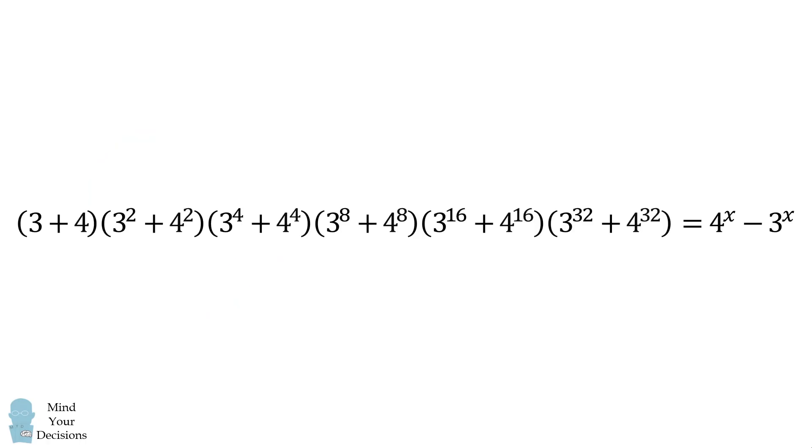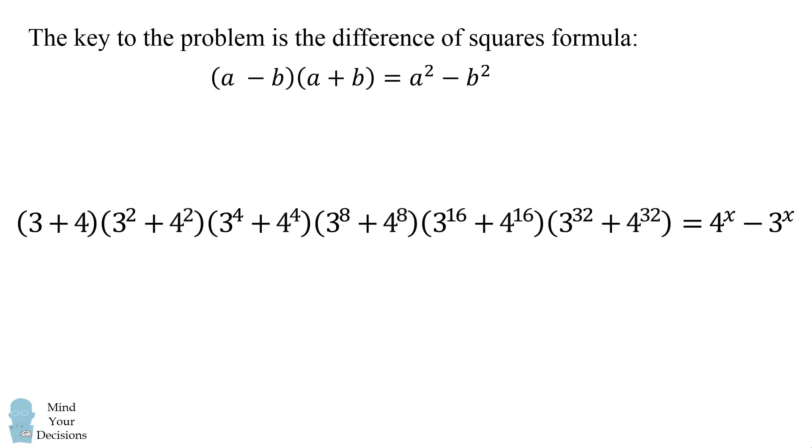So we just need to find one value of x that works. The key to this problem is the difference of squares formula: The quantity a minus b times the quantity a plus b is equal to a squared minus b squared.